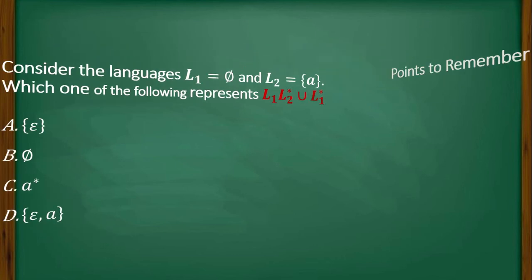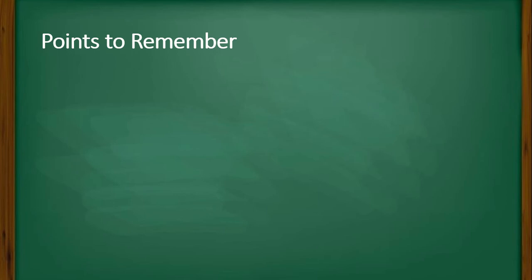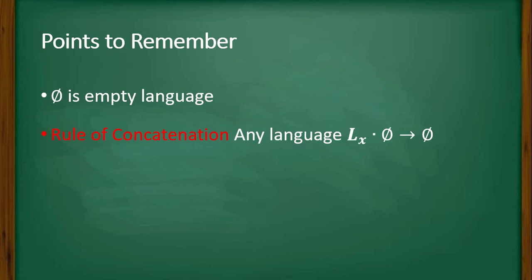To answer this question, we need to remember a few points. φ is empty language, that is nothing, no symbol in the language. Rule of concatenation of empty language: any language Lx if we concatenate with φ, result will be φ. It doesn't matter how many symbols are there in Lx. It is like multiplying with 0.